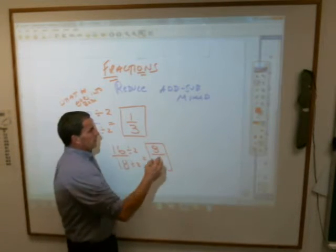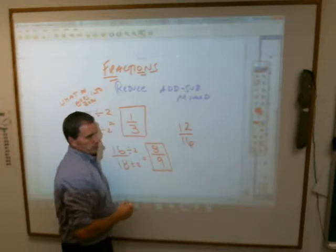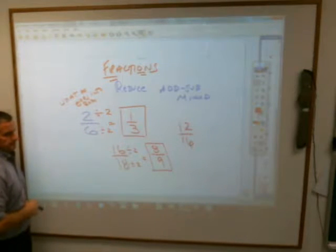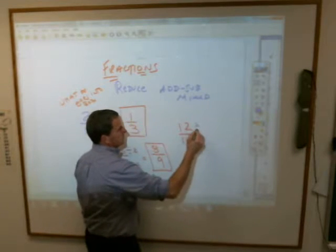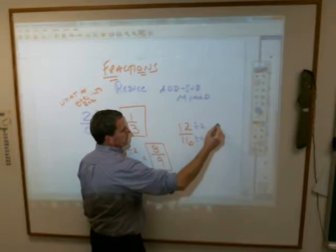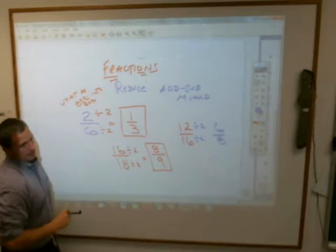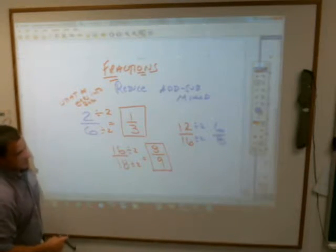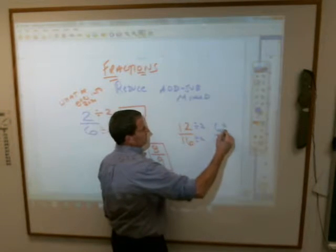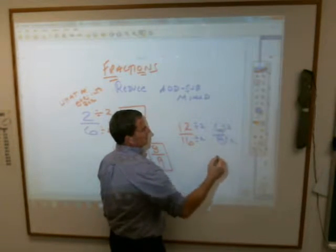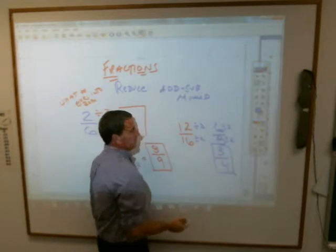How about one more? What about twelve over sixteen? What number goes into both twelve and sixteen, Parker? Two. All right. Parker says two. So if I divide them both by two, I get six and eight. Then I have to look at six and eight and say, what number? Two. Two again, cut them both in half, you get three-fourths, and then that one is reduced all the way.